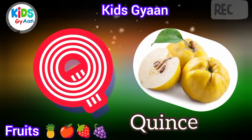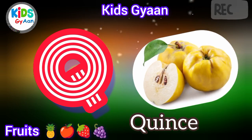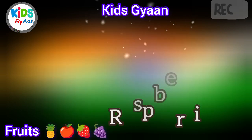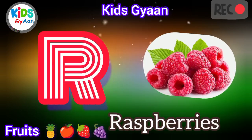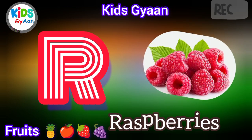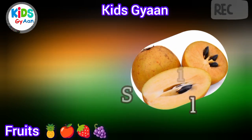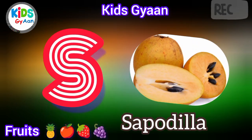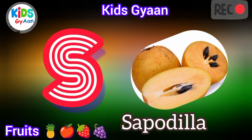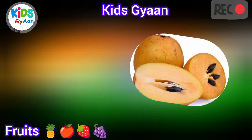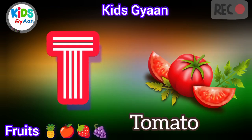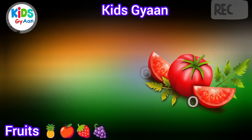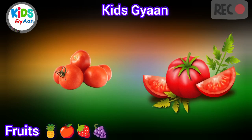Q is for Quince. R is for Raspberries. S is for Sapodilla. T is for Tomato.